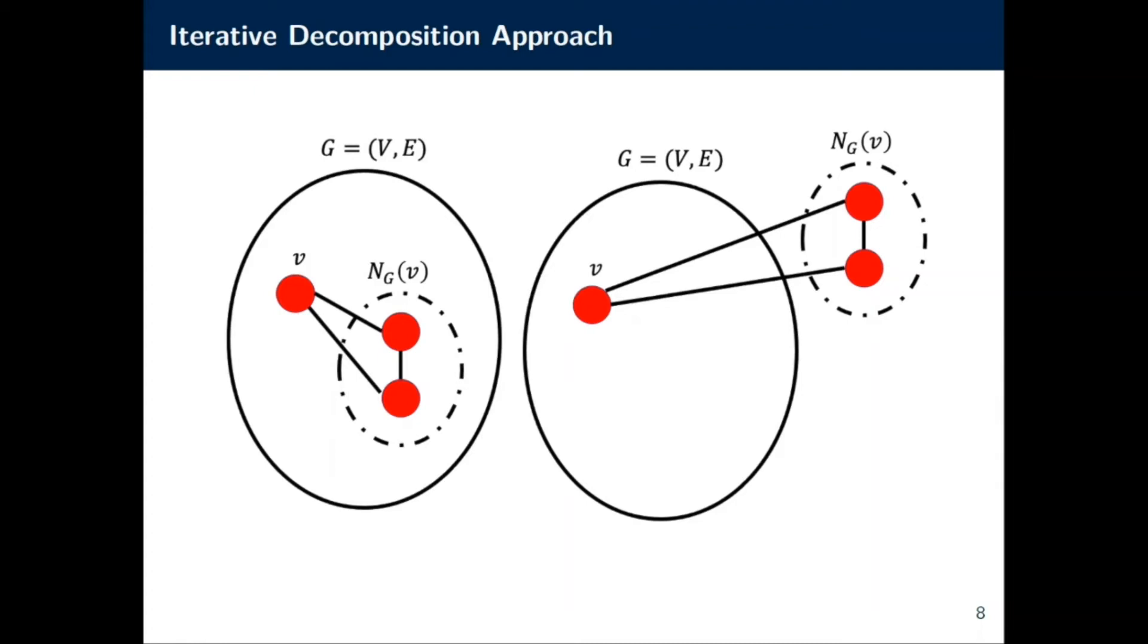Now if v has a lot of triangles, then we know its neighborhood is going to have a lot of edges. In fact, we can show that the number of edges inside of its neighborhood is going to be significantly, or at least noticeably, greater than the number of edges leaving its neighborhood.